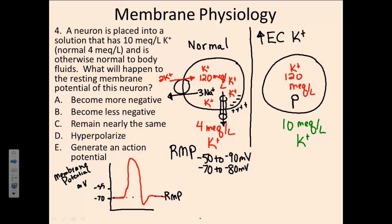Remember that we have those leak channels, which are very important for establishing our resting membrane potential. We would still see potassium leaving the cell and still see a negative resting membrane potential. However, the difference is that we have decreased the concentration gradient for potassium. Less potassium would be moving through the leak channels from inside to outside the cell. Essentially, more of these positive potassium cations are being held inside the cell.